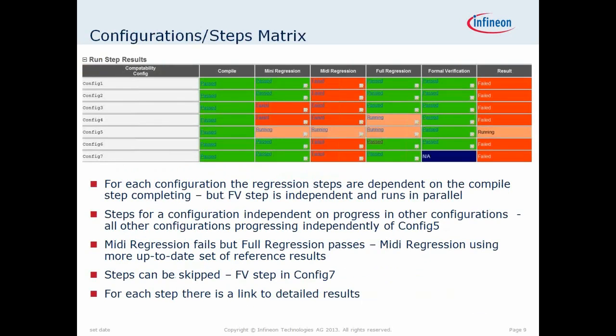This is what a set of results might look like: you have a single user-facing interface into the results. If they all pass, the user really doesn't need to look any further. We have a set of configurations down the side and the checks or steps along the top, and those checks can say passed, failed, running, or skipped. If you have a failing check, you can click on it and it takes you to the actual results — for instance, the web page for the regression results — so you can see in more detail which tests were failing and why.